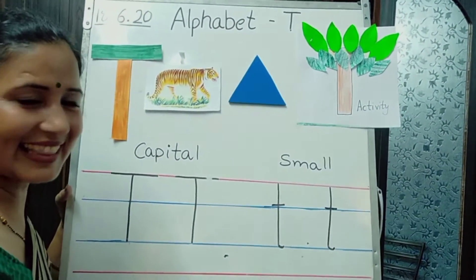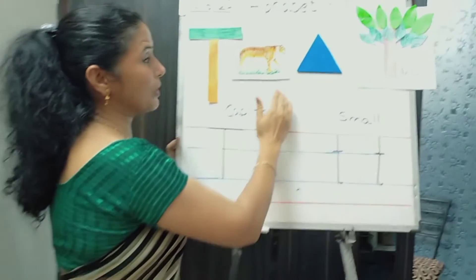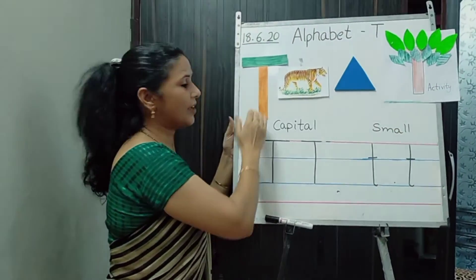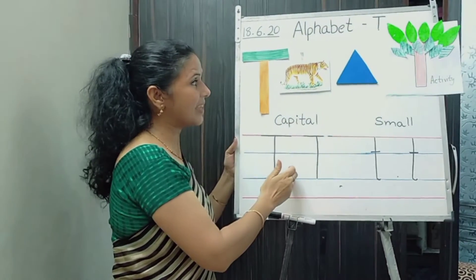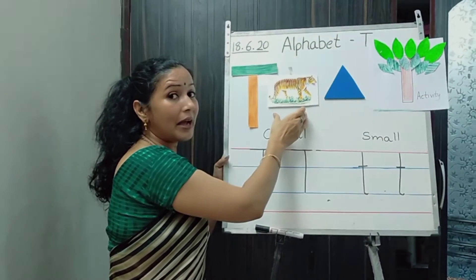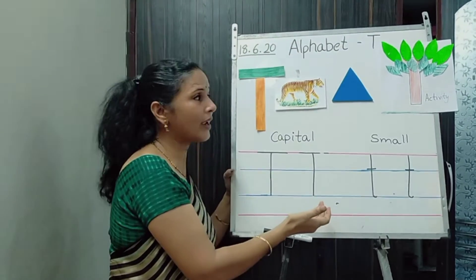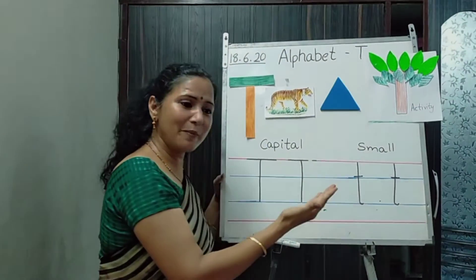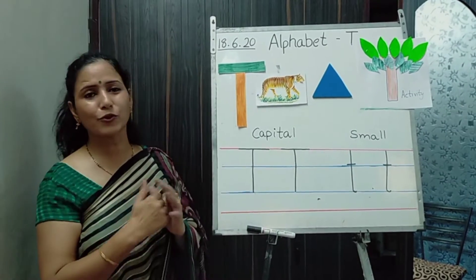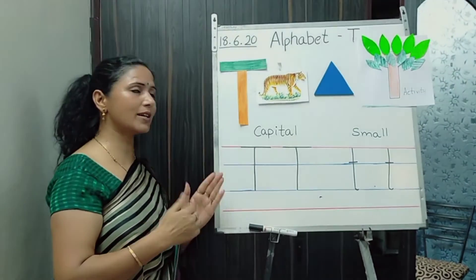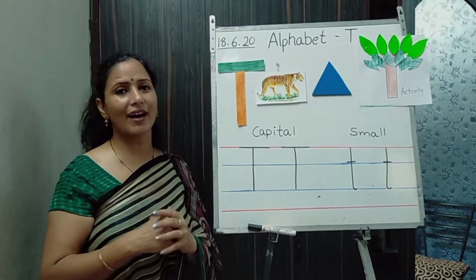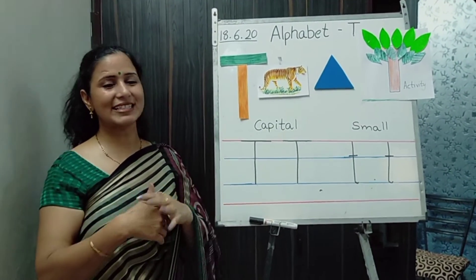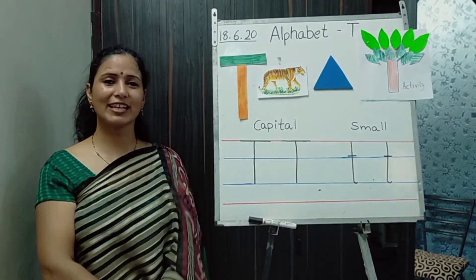Is it a simple activity? So, children, we have learned letter T's formation. You have learned picture reading, recognition, drawing and craft work. Okay, you have to revise these words at your home. Hope you like this video. Do subscribe, like and share my channel. Thank you so much. Have a nice day.